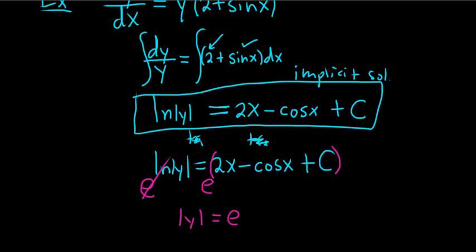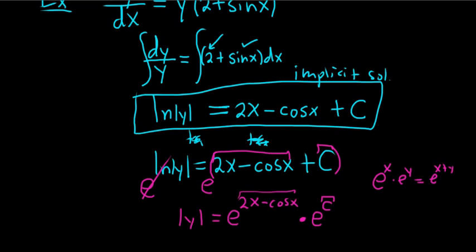This is equal to e to the 2x minus cosine x times e to the c. If you're wondering where the times comes from, it's because when you multiply these, you add the exponents. Think simple. If you had e to the x times e to the y, that would be e to the x plus y. It's the same thing here. This is your x and this is your y. So when you add them, you get e to the x plus y. The multiplication turns into addition of exponents.